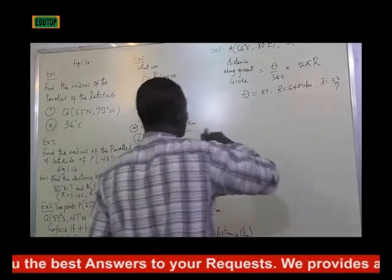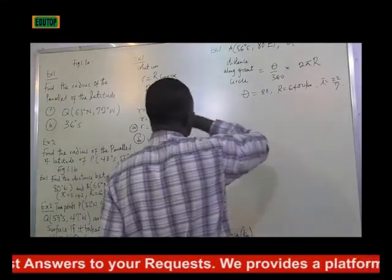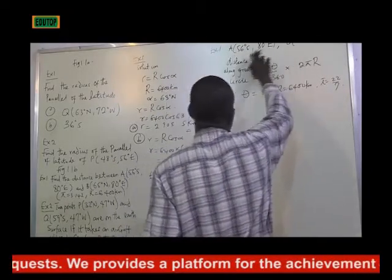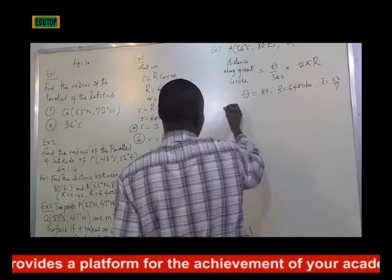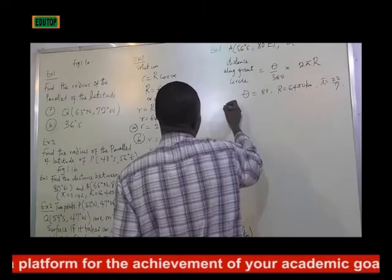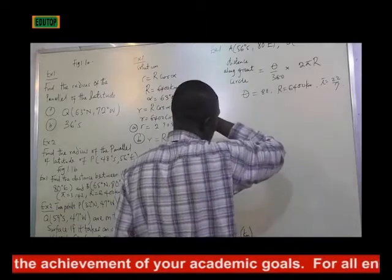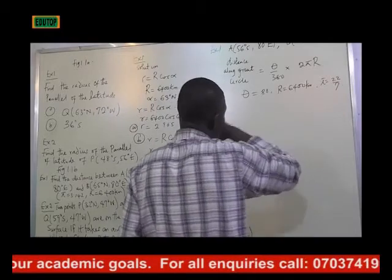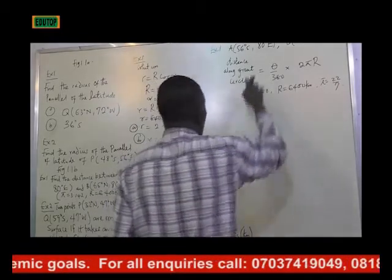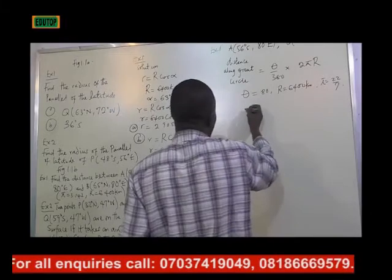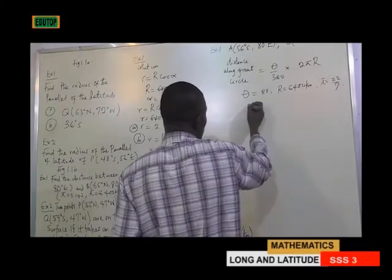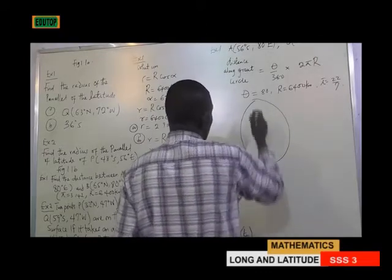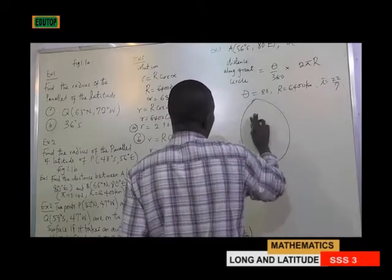It should be noted that since our latitudes are in different directions, when you have different directions you are meant to add, and when you have the same direction you are meant to subtract. The first thing we have to do is draw the sphere and try to locate our points.